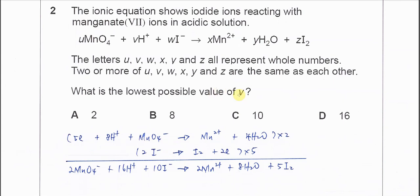This question asks you to find the balanced equation between the permanganate ion and iodide ion which form manganese 2+ ion and iodine. What is the lowest possible value of V?